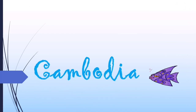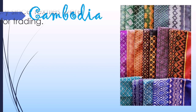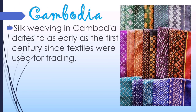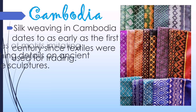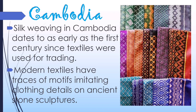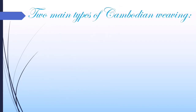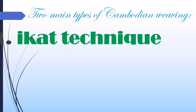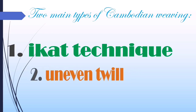The next country is Cambodia. Cambodia also has their silk, called Cambodian silk weaving. Silk weaving in Cambodia dates back to as early as the first century, when textiles were used for trading. Modern textiles have traces of motifs imitating clothing details on Asian stone sculptures. There are two main types of Cambodian weaving: the Ikat technique and the uneven twill.